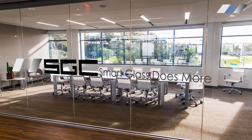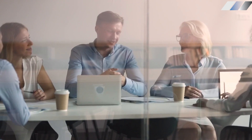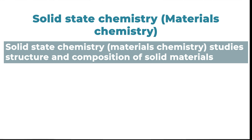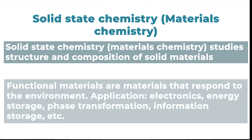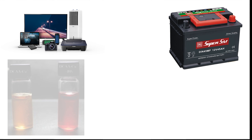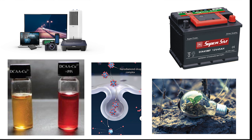Now you have an idea of the scope of inorganic chemistry. Let's take a more precise look and consider some important areas of application. Imagine you can switch on and off the transparency of glass so you don't need curtains anymore — something from the future, you say. But smart glass technology is developing today, and we should say thanks to solid state chemistry. Solid state chemistry, or materials chemistry, studies the structure and composition of solid materials. Materials chemistry is one of the largest areas in inorganic chemistry and is applied for electronics, energy storage, sensors, drug delivery, nature remediation, and many other spheres.